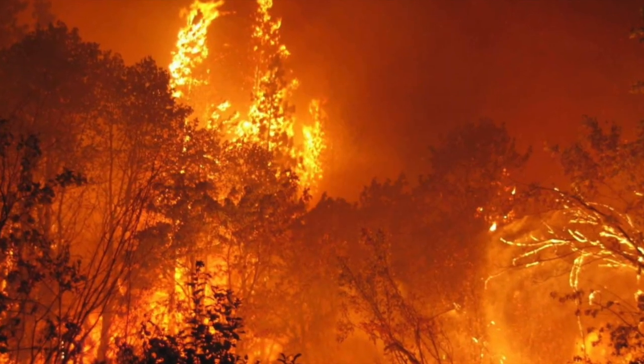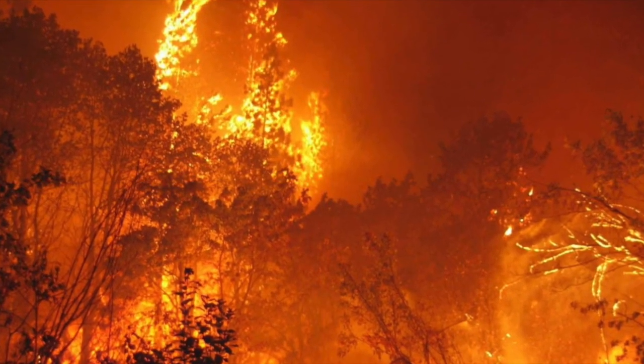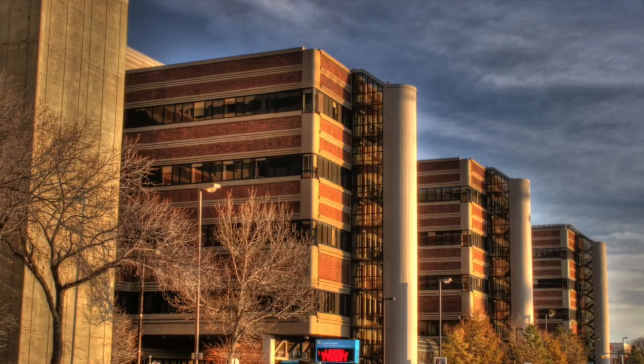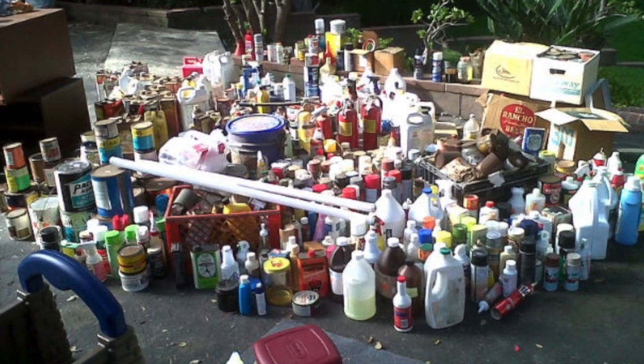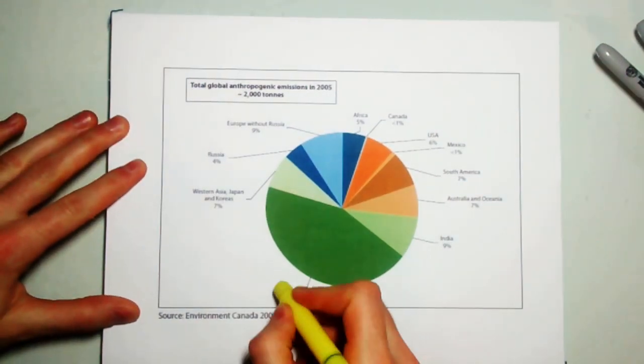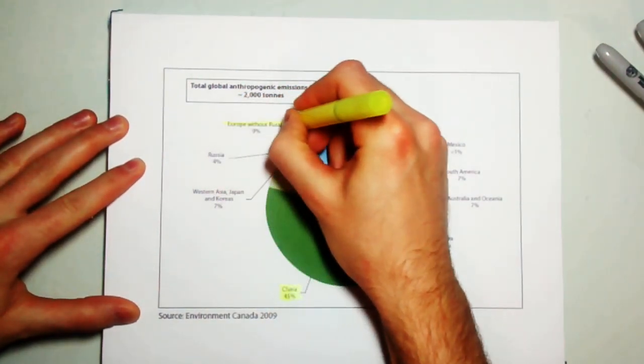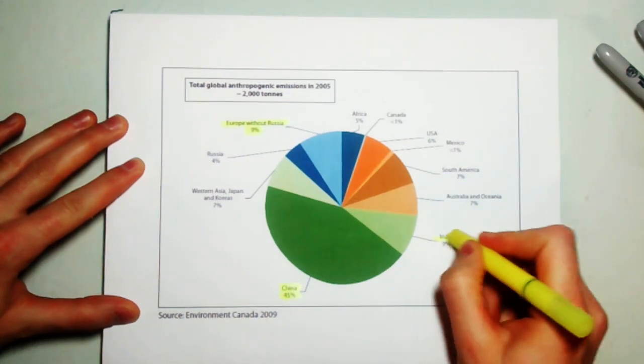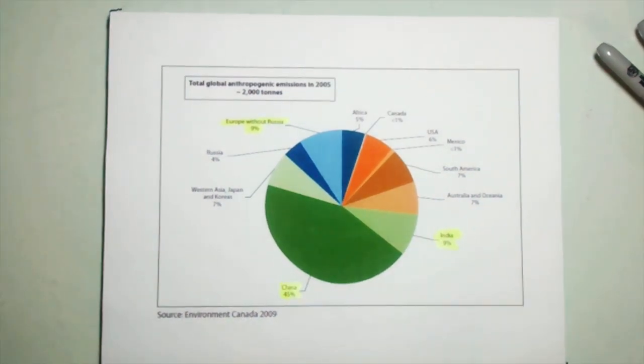Mercury pollution comes from natural and human sources, including forest fires, coal burning, crematoriums, hospital waste incineration, and burning of hazardous materials. This graph is of the total global mercury emissions by country. China, India, and Europe without Russia are the top three contributors to mercury pollution.